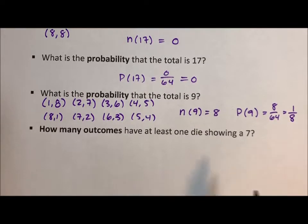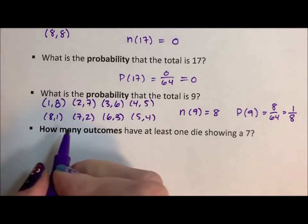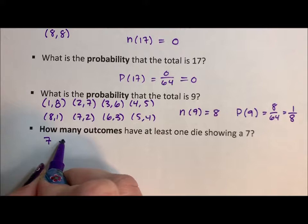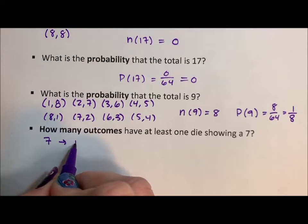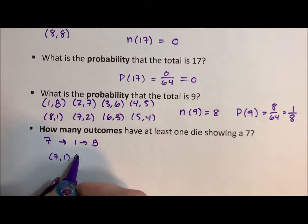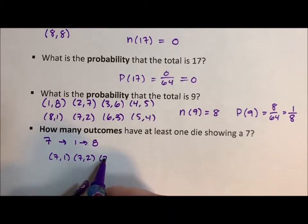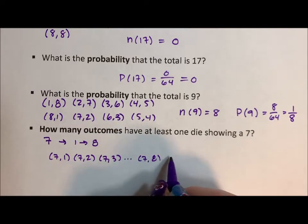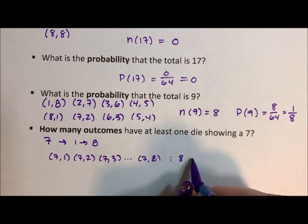You can get a 7 on the first die with any number on the second die, 1 through 8. So there's (7,1), (7,2), (7,3), all the way up to (7,8). That's 8 elements.